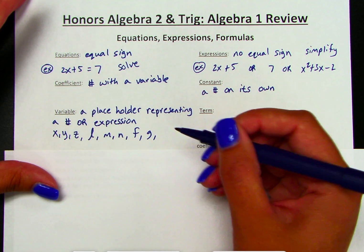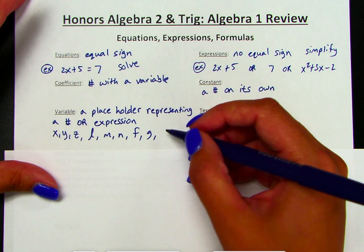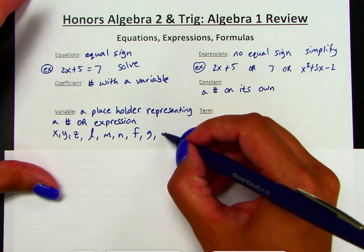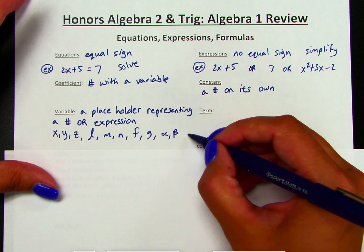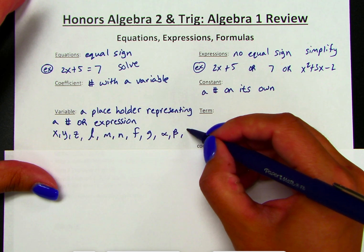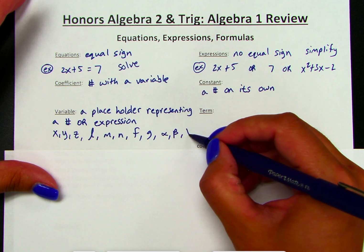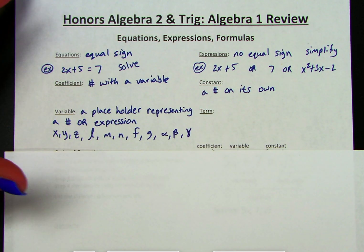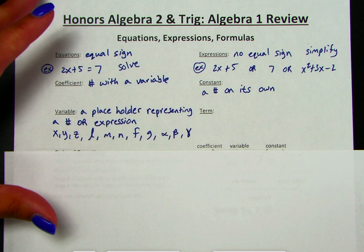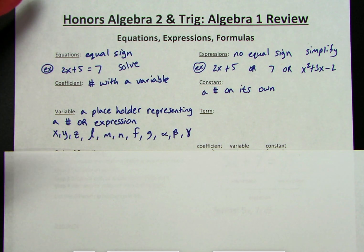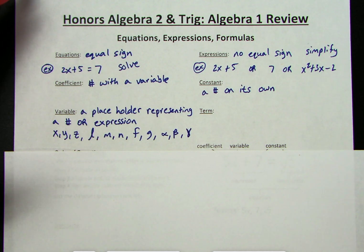Some other popular variables, if we're getting into our Greek alphabet, are alpha, beta, and gamma. But we can use any symbol we want for a variable — a heart, a smiley face, whatever you want — as long as you define it.